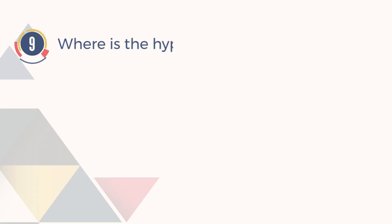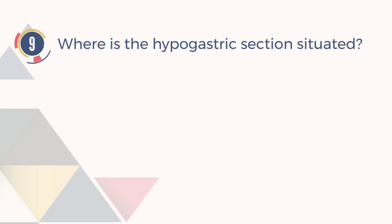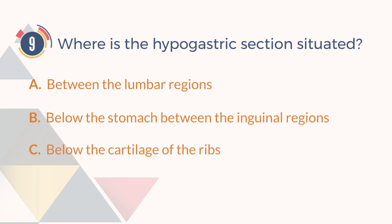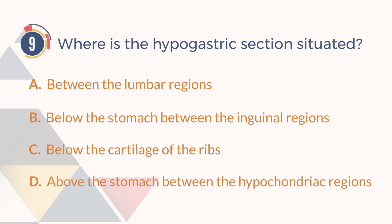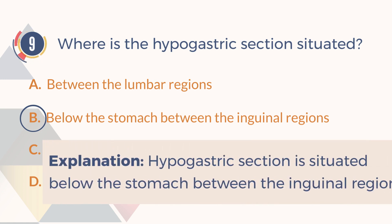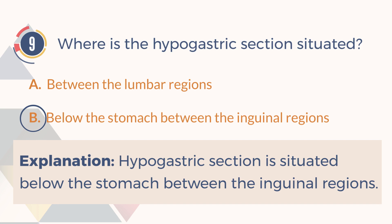Number 9. Where is the hypogastric section situated? A. Between the lumbar regions. B. Below the stomach between the inguinal regions. C. Below the cartilage of the ribs. D. Above the stomach between the hypochondriac regions. The answer is B. Below the stomach between the inguinal regions. Explanation: The hypogastric section is situated below the stomach between the inguinal regions.